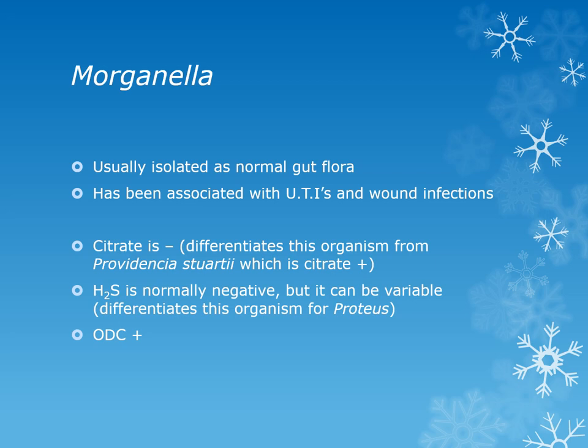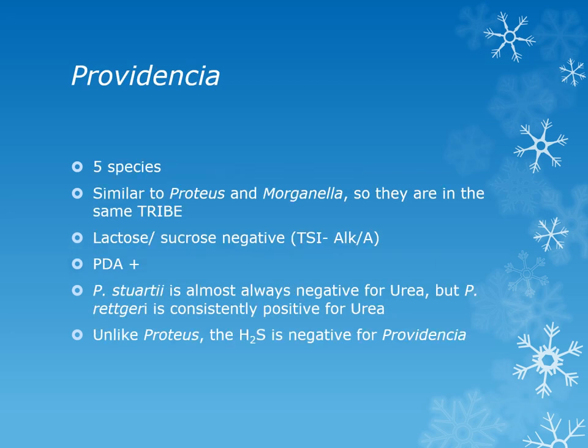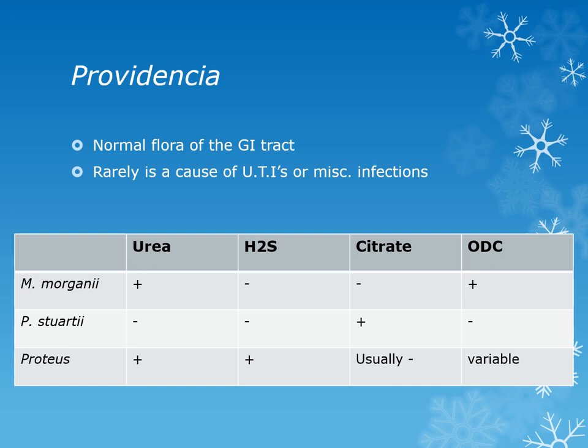Morganella is usually isolated as normal gastrointestinal flora but can be an opportunistic pathogen, most commonly isolated from post-operative wound infections and urinary tract infections. There are five species of Providencia, also in the same tribe as Proteus and Morganella. They are lactose and sucrose negative (TSI: alkaline over acid), phenylalanine deaminase positive, and H2S negative. Providencia stuartii is almost always negative for urea, while Providencia rettgeri is consistently positive. Providencia is normal flora of the gut and occasionally causes UTIs.